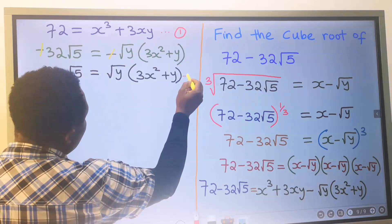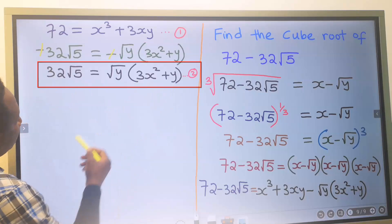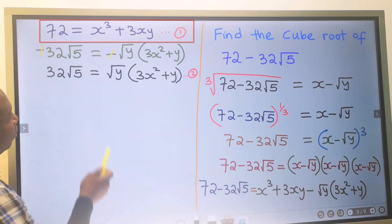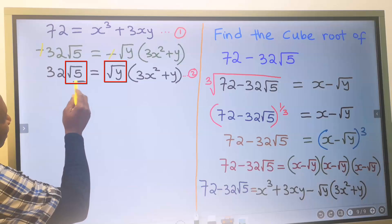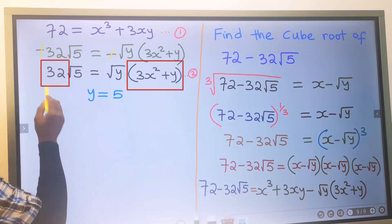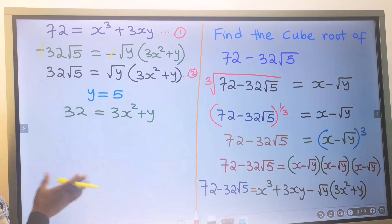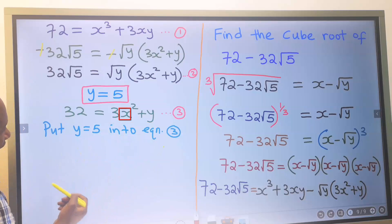I will call this equation 2. Equation 1 is a polynomial function and equation 2 is a quadratic function. It will be easier to use the quadratic function, then use the polynomial function to check for accuracy. Next, we are going to make an assumption — we assume that 5 is equal to y. Then, if y is equal to 5, that means 32 will equal 3x squared plus y. We will call this equation 3.